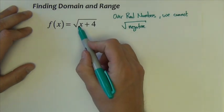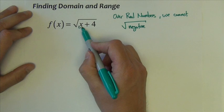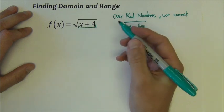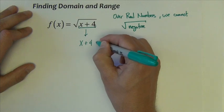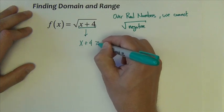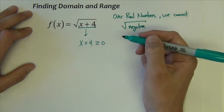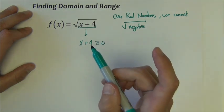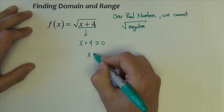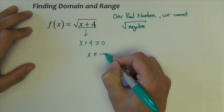Now we know that over real numbers, we cannot square root a negative number. So what I'm going to do is take this part right here, the x plus four, which is under the square root, and say that x plus four must be greater than or equal to zero. In other words, it can't be negative. If I solve this for x, x has to be greater than or equal to negative four.